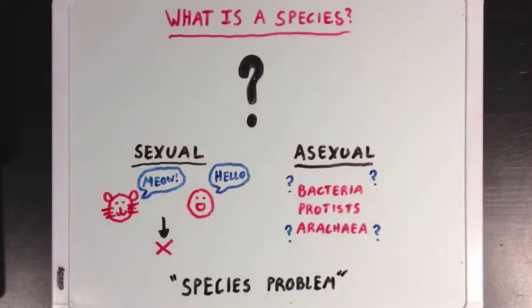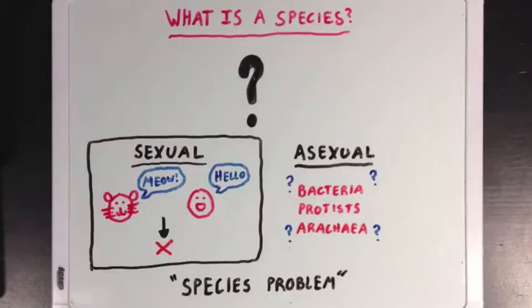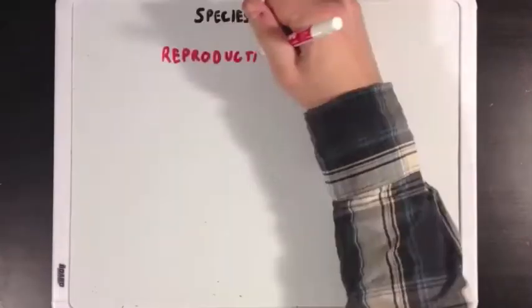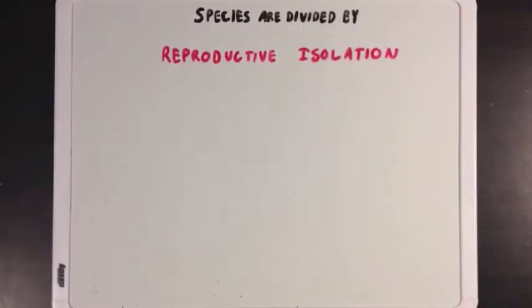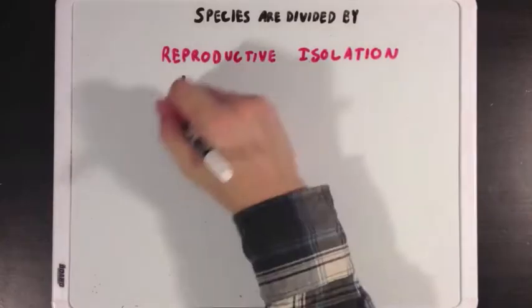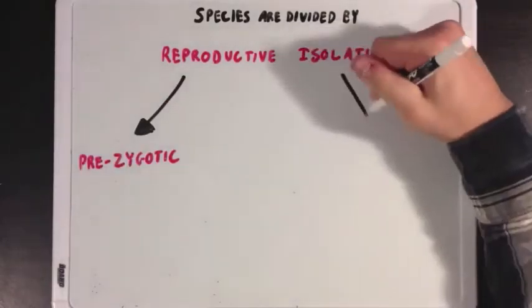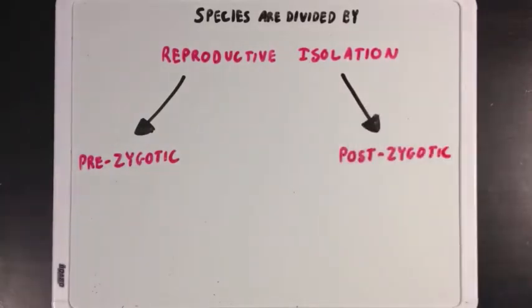But in this video, we're going to spend time just looking at those sexually reproducing organisms. And these are separated into different species by different forms of what we call reproductive isolation. This is the idea that there are many forces that stop two different organisms from having offspring together. And we can divide these forces into two separate categories: prezygotic forms and postzygotic forms.